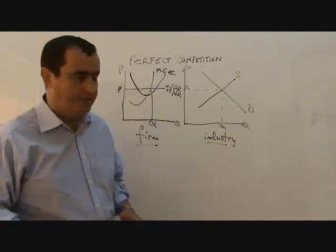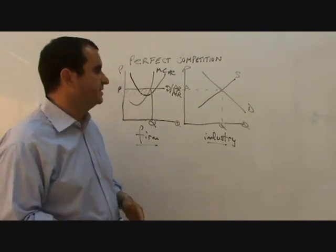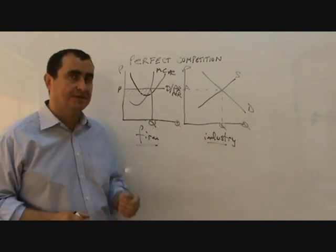So, the market may allow firms to make abnormal profit in the short run, but only in the short run. Because what happens in perfect competition, if firms are making abnormal profit, as they are here,